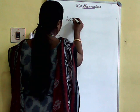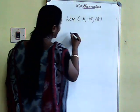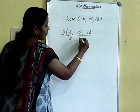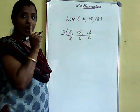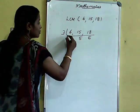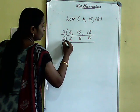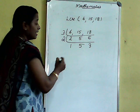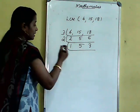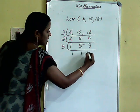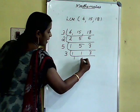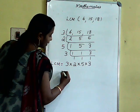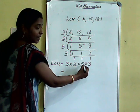LCM of 6, 15, 18. Which number is common? 3. So 3 goes into 6 twice, 15 five times, 18 six times. Continuing: 2, 5, 6 — then 5 and 3 remain. LCM = 3 × 2 × 5 × 3. That is: 3 × 2 = 6, 6 × 5 = 30, 30 × 3 = 90.